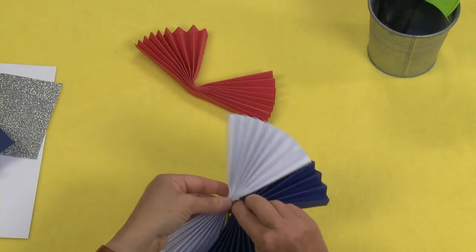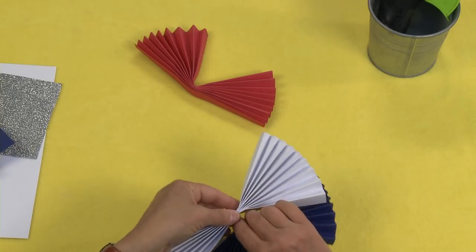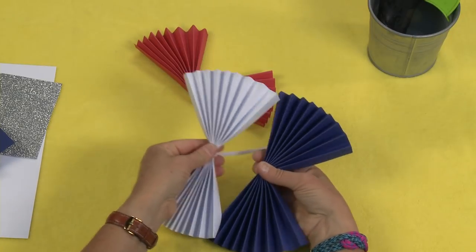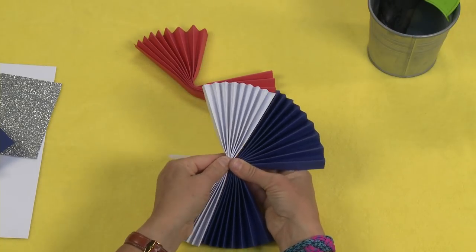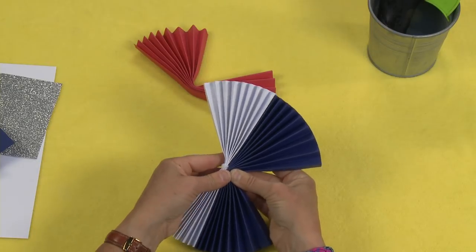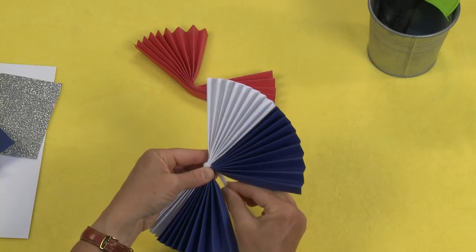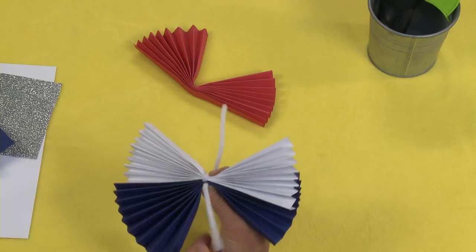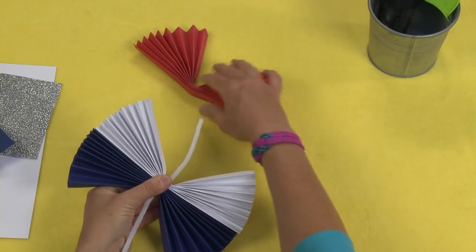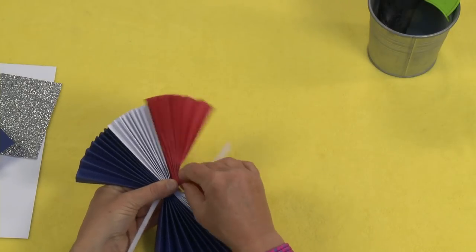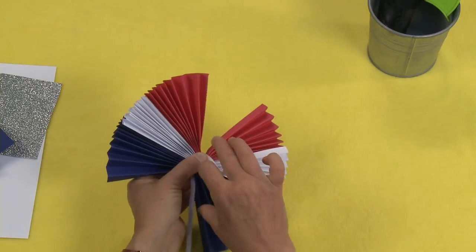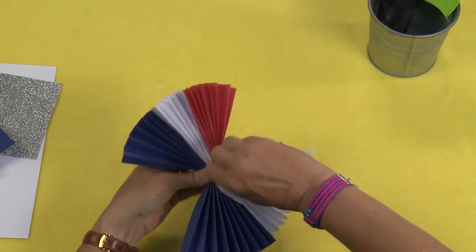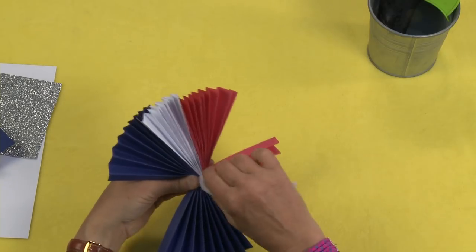Now I'm going to take my blue and I'm going to line it right on up here with my white, and I'm going to wrap this around. And then I'm going to do the same thing with my red. Line it up there and wrap it around. And I'm going to wrap this nice and tight. This is just going to be my hanger.